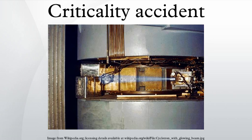Criticality accidents are divided into one of two categories: process accidents, where controls in place to prevent any criticality are breached; and reactor accidents, where deliberately achieved criticality in a nuclear reactor becomes uncontrollable. Excursion types can be classified into four categories depicting the nature of the evolution over time: prompt criticality excursion, transient criticality excursion, exponential excursion, and steady state excursion.